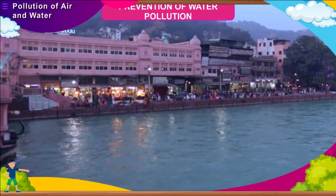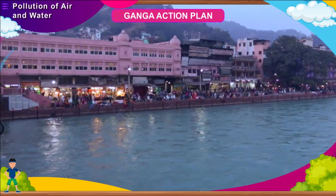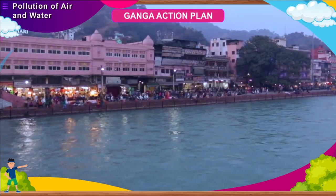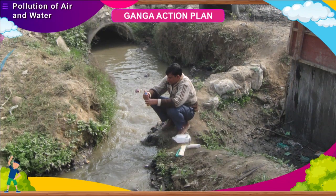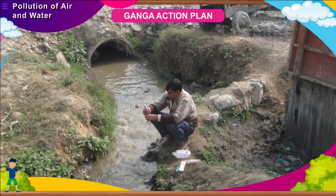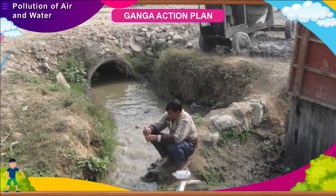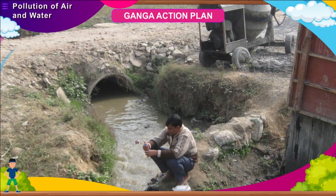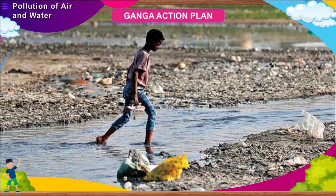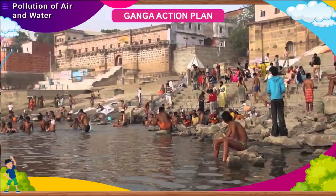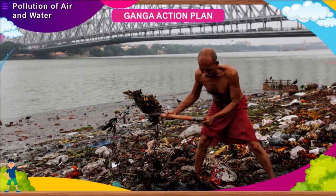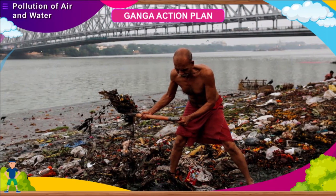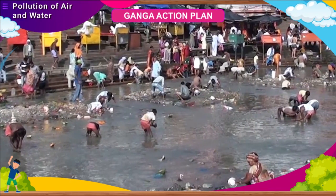Wells should be covered. Ganga Action Plan. The Government of India launched a program called the Ganga Action Plan in 1986 to reduce the pollution levels in the river. The GAP aimed at interception and diversion of wastewater reaching the Ganga and installation of sewage treatment plants. Other pollution-controlling activities included solid waste management, installation of crematoria and provision of low-cost sanitation facilities. The plan also laid emphasis on public awareness and involvement to reduce pollution, although we still have a long way to go before the river is absolutely free of pollution.